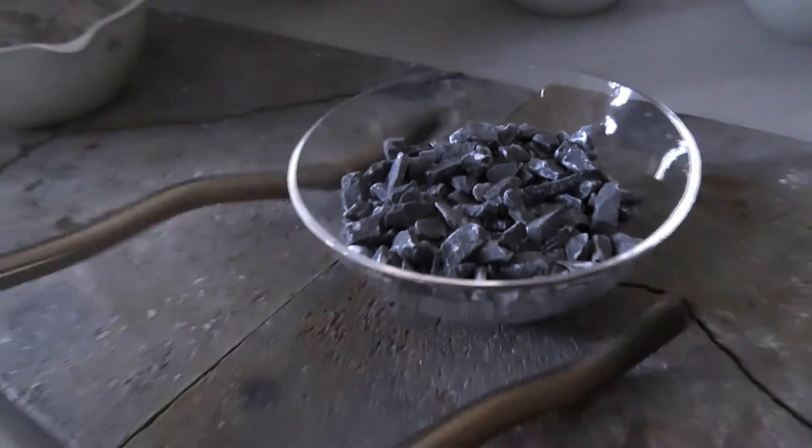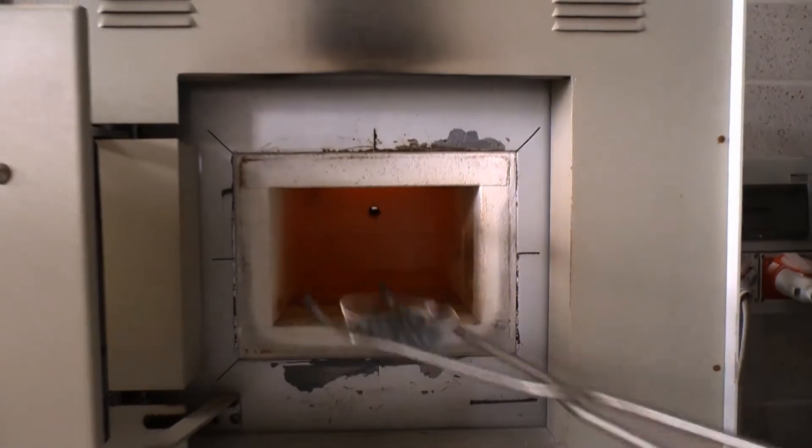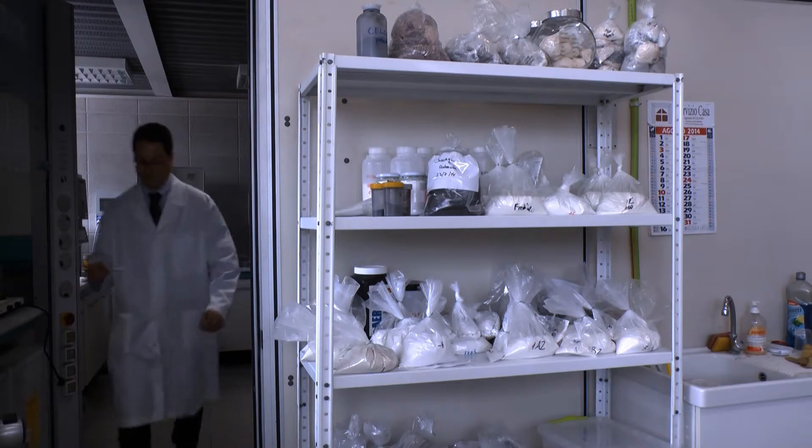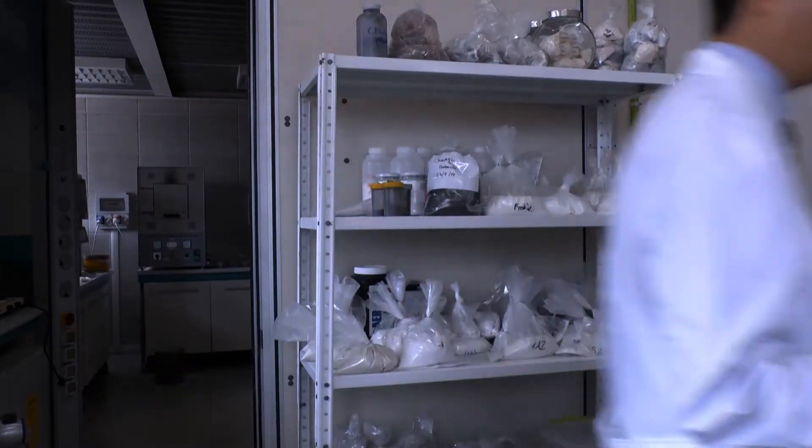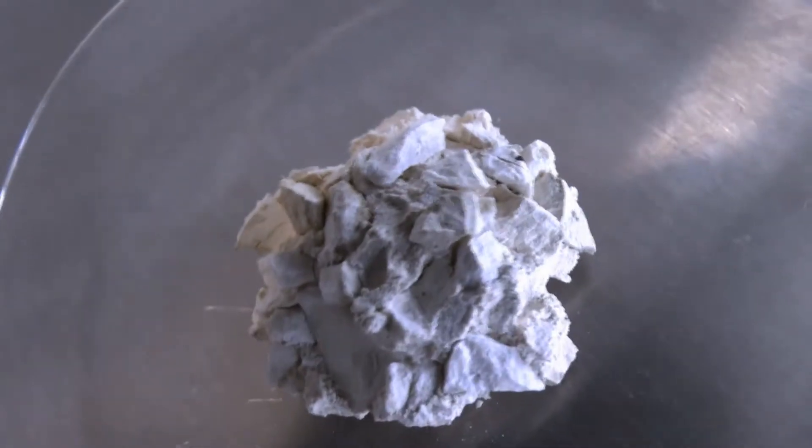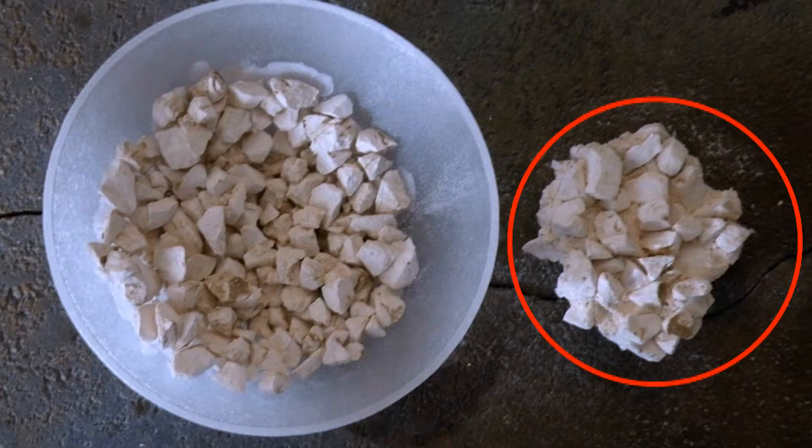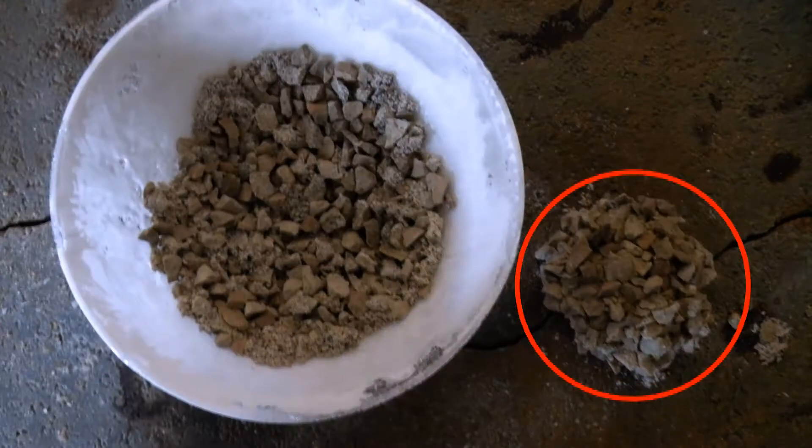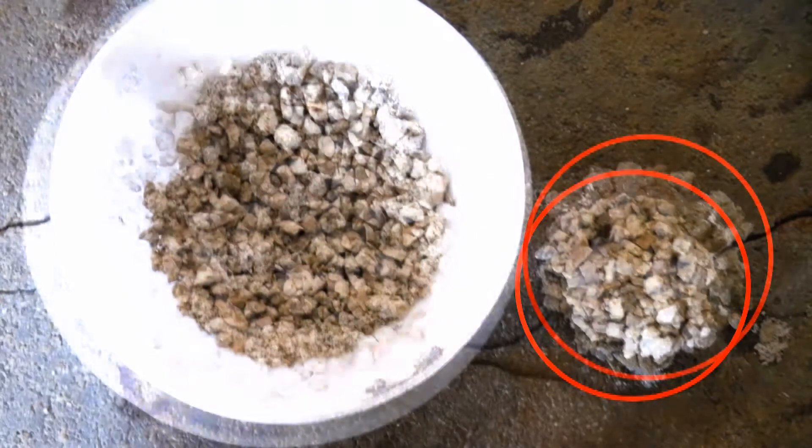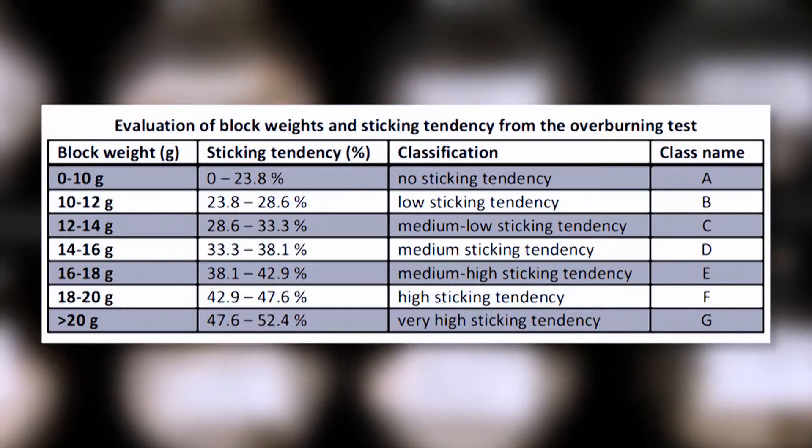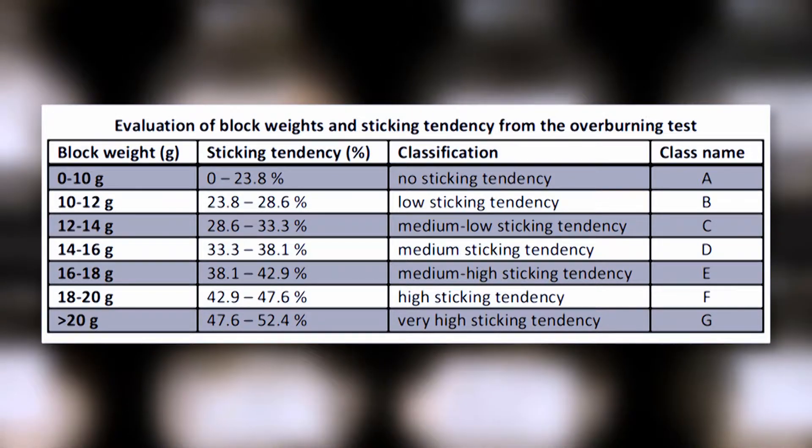The crucible is placed into the muffle furnace at 1300 degrees centigrade. At the end of the test, the crucible is cooled for a while. The preliminary visual inspection allows us to evaluate if the sample is partially melted and weighed. The cleaning operation must be done as quickly as possible because blocks upon cooling could have a tendency to disintegrate. Finally, block weights and sticking tendency are calculated.